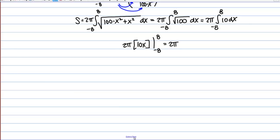So I've got 2 pi and then it looks like I've got 80 minus negative 80 or 2 pi times 160 or 320 pi.